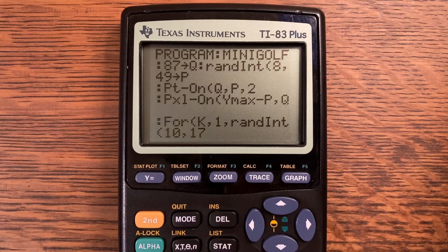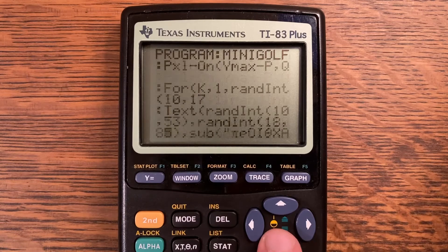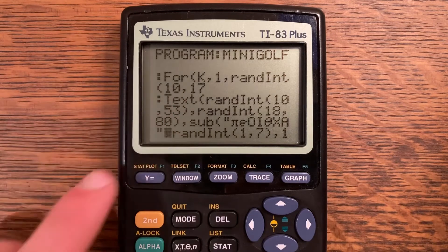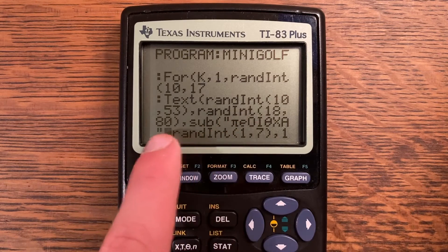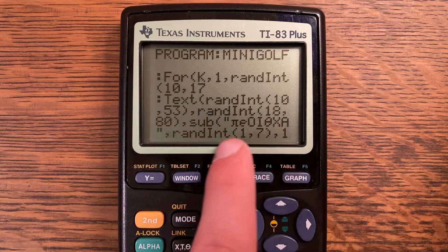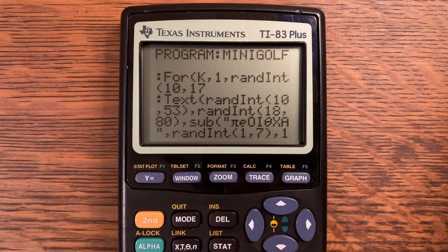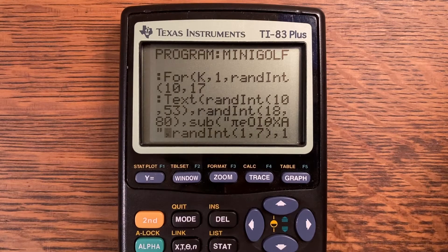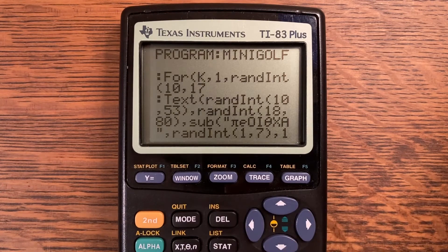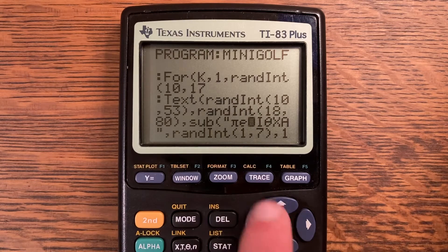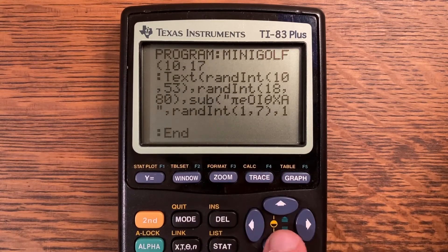Point on at Q comma P comma 2 and pixel on at Y-max minus P comma Q. For K comma 1 comma randint between 10 and 17, text at randint from 10 to 53 and then a comma randint 18 through 80 and then sub. So anything from the string, we pick a random character from here from 1 to 7 and only take one of them. These characters in the string I just picked some that I thought would look nice. You can pick whatever characters you want, for example you could do uppercase and lowercase O's. Those look like little circles or maybe a Q or something like that.